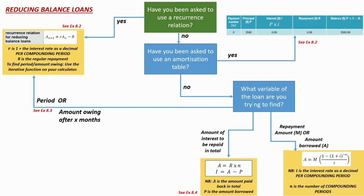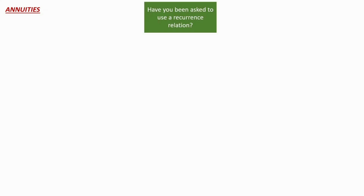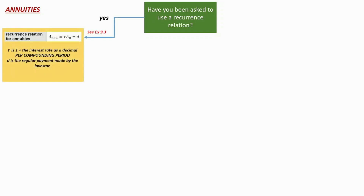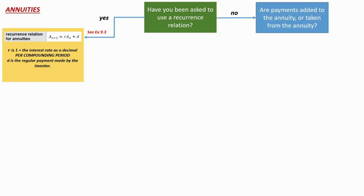Now we're moving on to annuities — our final slide. If we've worked out it's an annuity, we ask ourselves if we have to use a recurrence relation. The question might say 'model the annuity with a recurrence relation,' in which case you go straight to your formula sheet. As per the reducing balance loan slide, R is 1 plus the interest rate as a decimal per compounding period, but D is added on instead of taken off because it's the regular payment made by the investor.